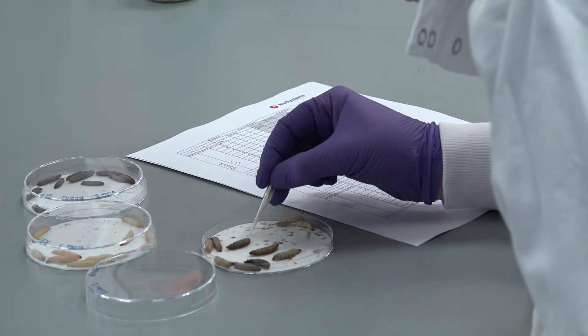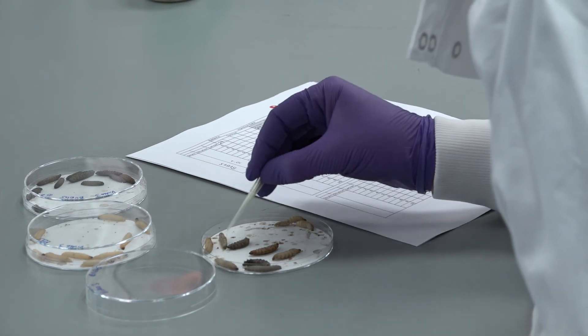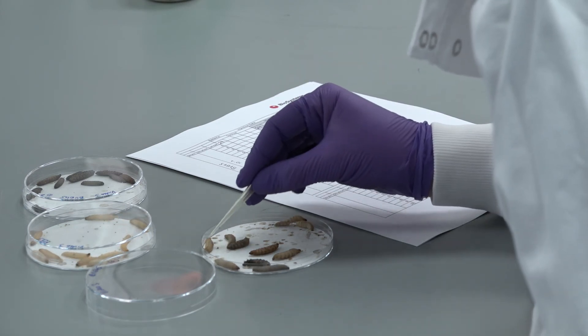To dispose of larvae, place in a minus 20 degree freezer overnight before autoclaving with other biological waste.